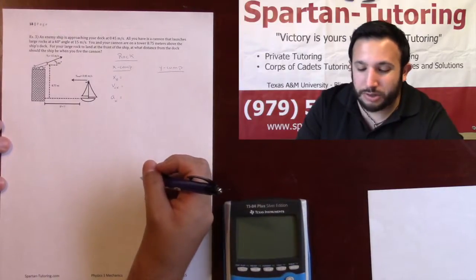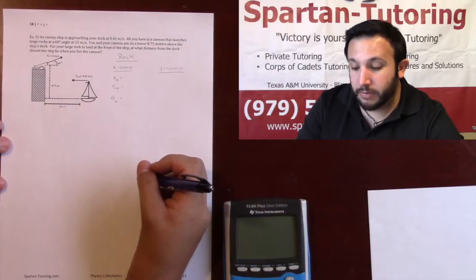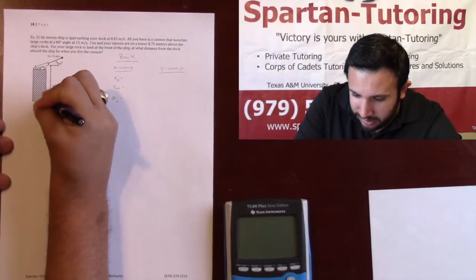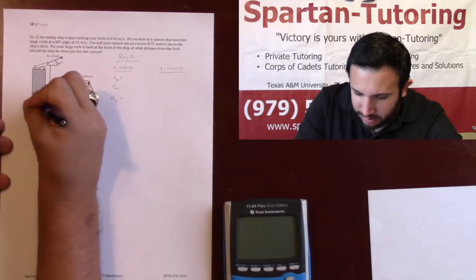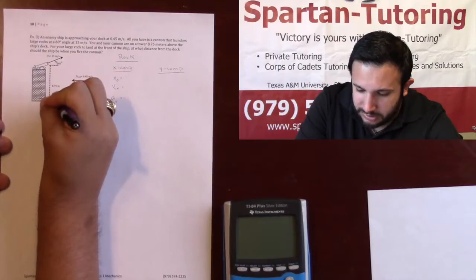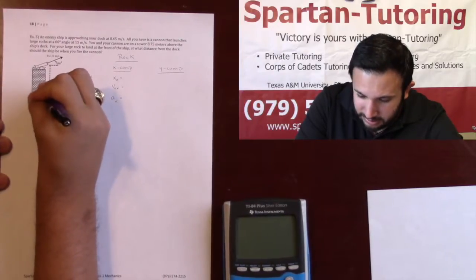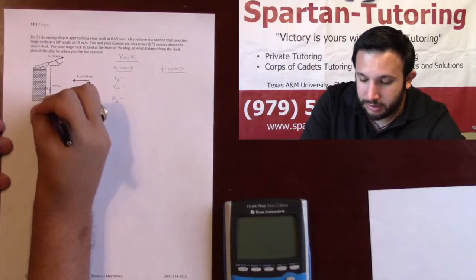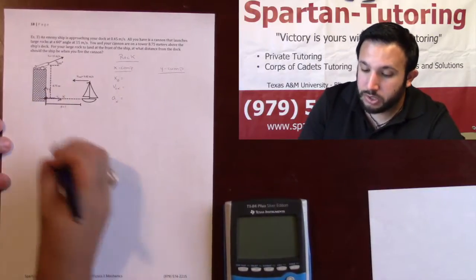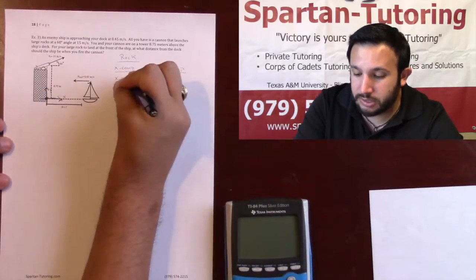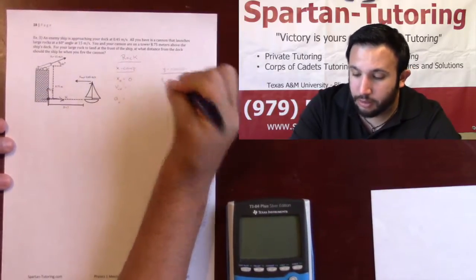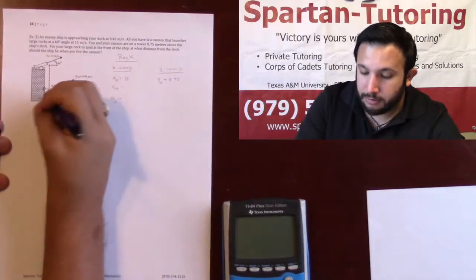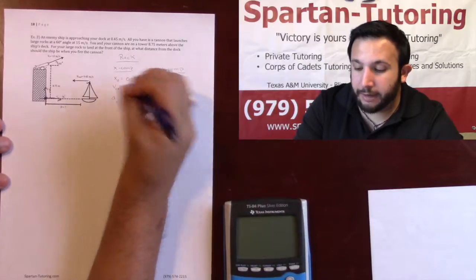As long as the math stays consistent with your origin, I don't care how you set it up, but where I think I'm going to set it up is I'm going to go ahead and put the origin right here, right where the floor is on the ship's deck. This will be x, this will be y, and then positive y going up. Here is going to be my origin, which means that the rock starts at x equals zero, but the y is going to start at 8.75.